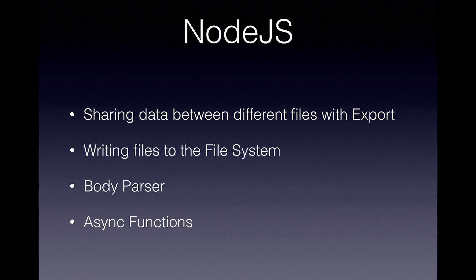Now I want to move on to a little bit of back-end stuff because this is a full stack developer course. Look at what Node.js is — it's written in JavaScript. Start by looking at how you can share files between different Node.js files, writing files to the file system, making a TXT file and writing it to your local computer, the body parser which takes text from the client side into Node.js, and asynchronous functions — functions that can run concurrently, where two or three can run at the same time without one needing to finish before another starts.